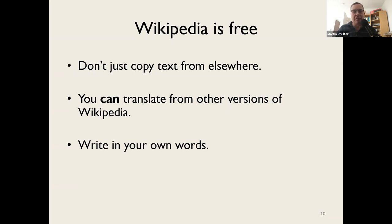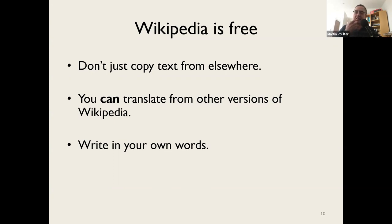It's so important to write in your own words. A past trainee got an article deleted because she took a scientist's CV, pasted it in, and then went through changing words so it wasn't exactly the same — that counts as close paraphrasing and Wikipedia is really concerned about that. It still counts as copyright violation, so the whole thing was deleted and had to be rewritten from scratch. The way to work is to read something, digest it, mull it over, and then think: how would you explain this to someone else? Come up with your own original text.